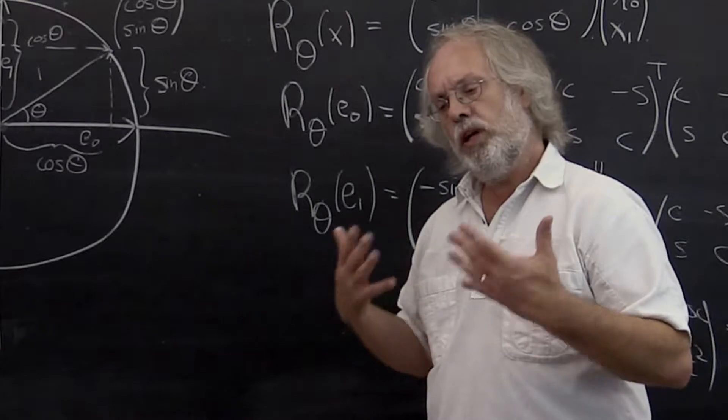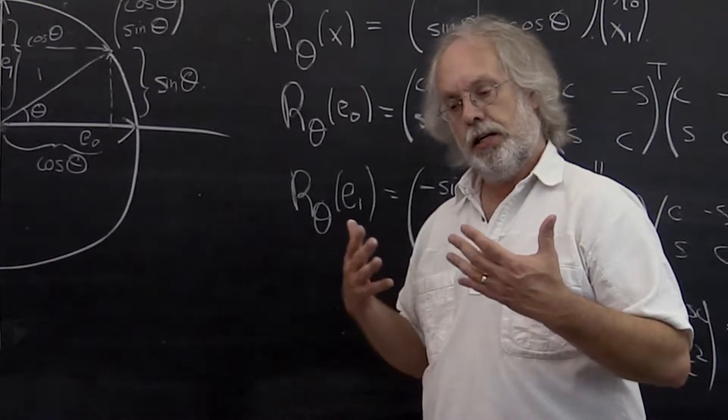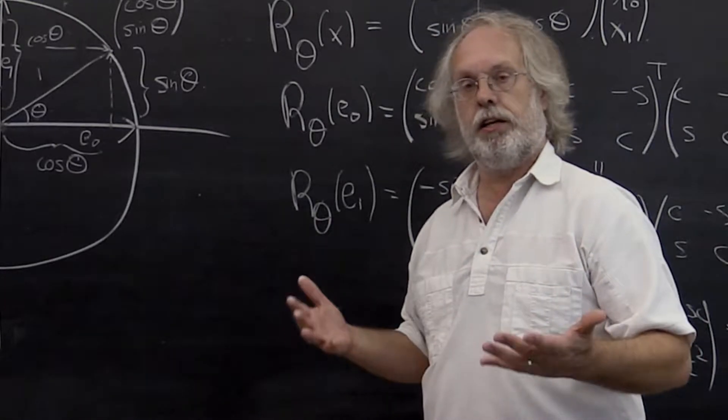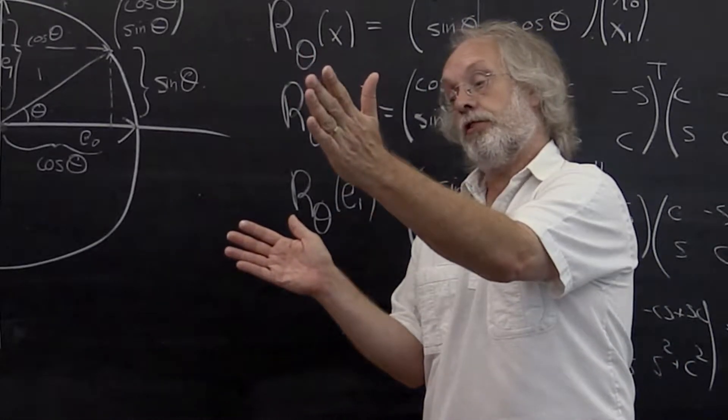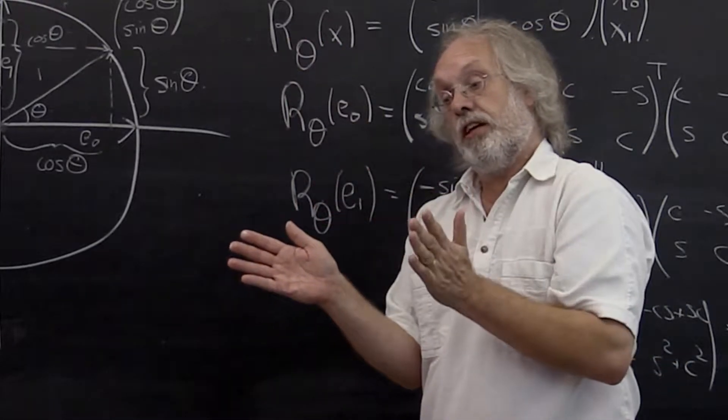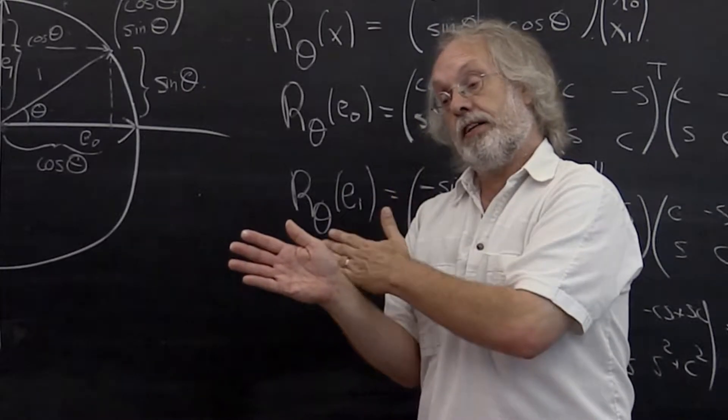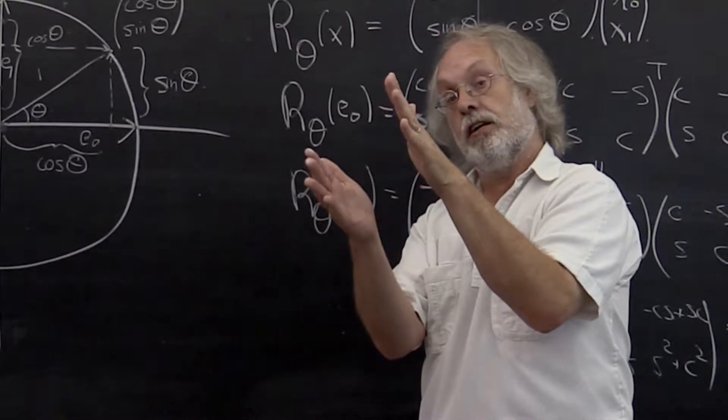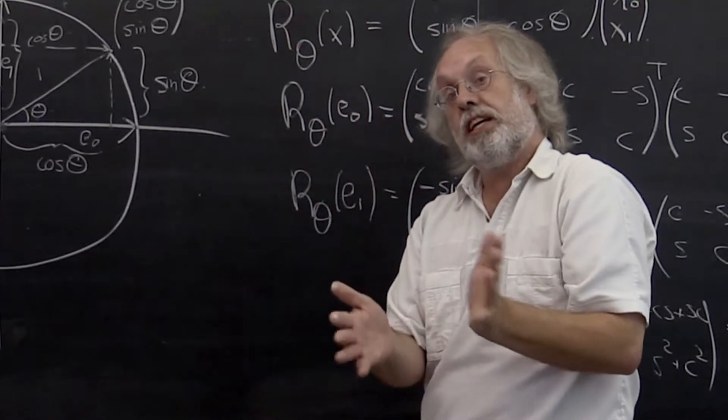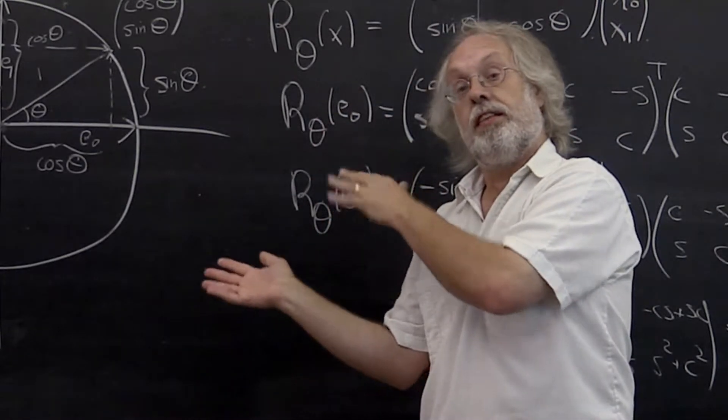Now you can reason through that indeed a reflection is actually a linear transformation. If you first scale the vector and then you reflect it, you get the same thing as you would get if you first reflect and then you scale. If you take two vectors and you add them together and then you reflect them, you get the same thing as first reflecting the two vectors and then adding them together.